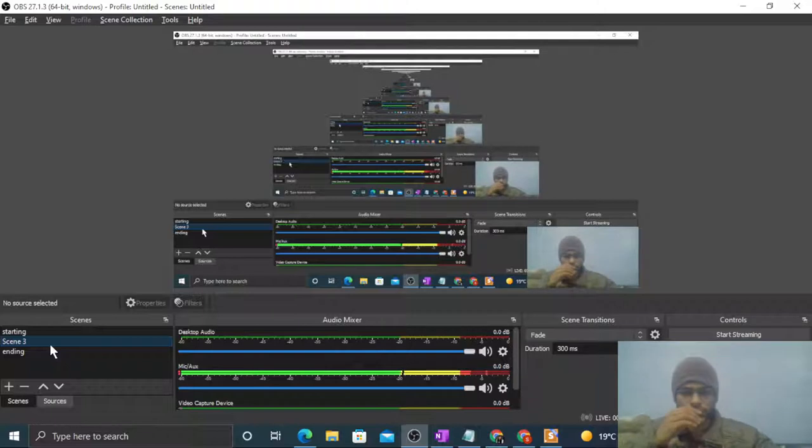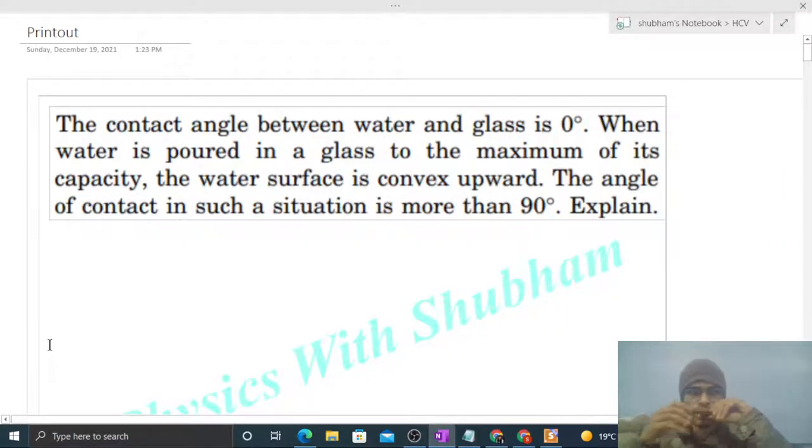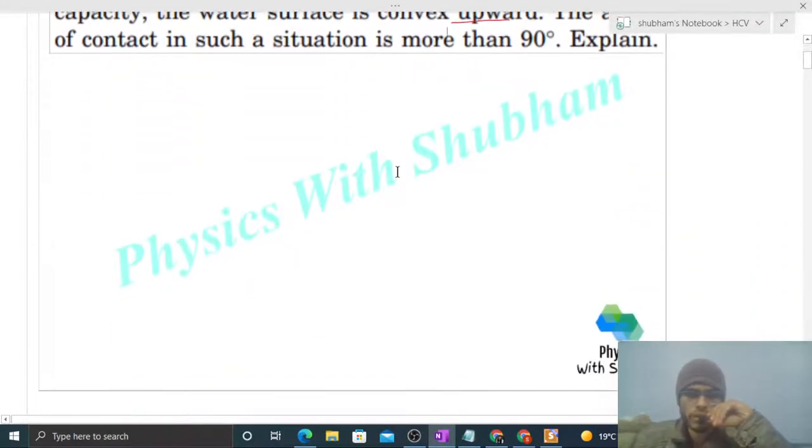Okay, hi everyone. So today let's discuss one interesting problem. It says the contact angle between water and glass is zero degrees. When water is poured in a glass to the maximum of its capacity, the water surface is convex upward. The angle of contact in such a situation is more than 90 degrees. Explain.